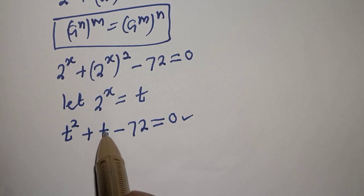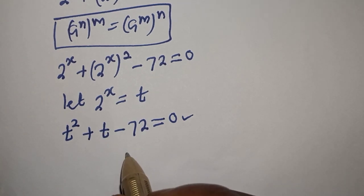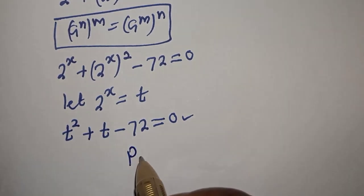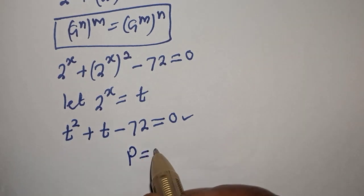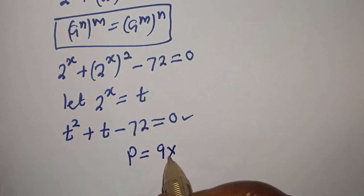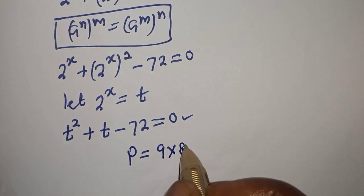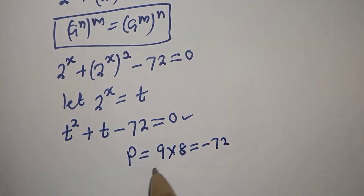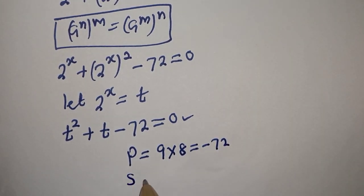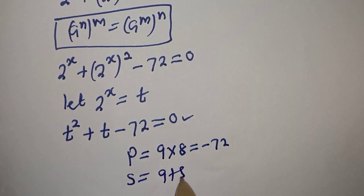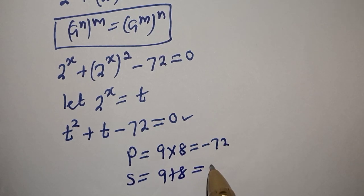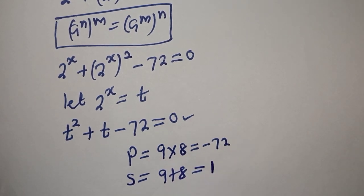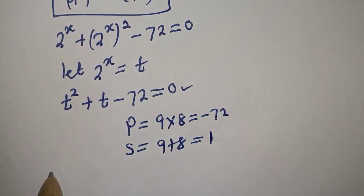One is the coefficient of t. Let's see: the product is equal to 9 multiplied by 8, which is equal to minus 72. The sum is equal to 9 plus 8, which is equal to 1. Now let's substitute.